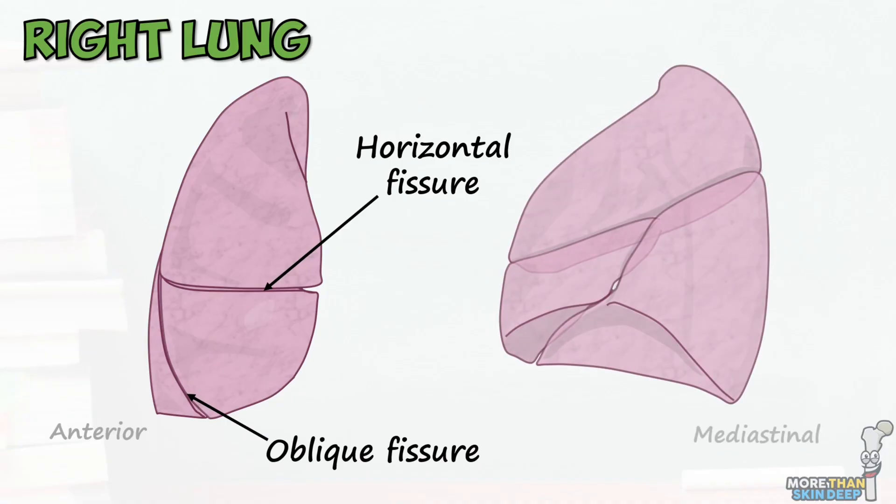The oblique fissure then continues upwards in the fourth intercostal space before slicing down and around the mediastinal surface of the lung towards the hilum. If we look at the right lung from its mediastinal surface, we can see that the horizontal and oblique fissures meet at the hilum.